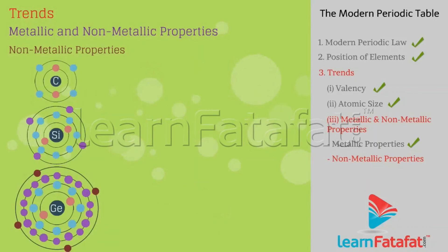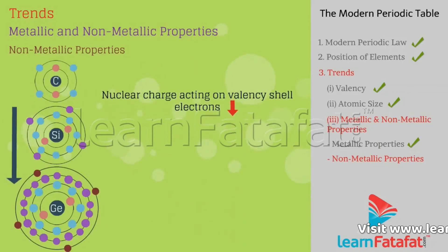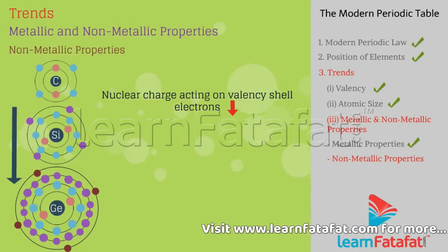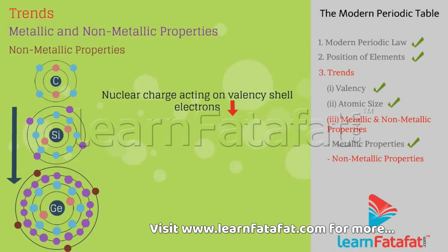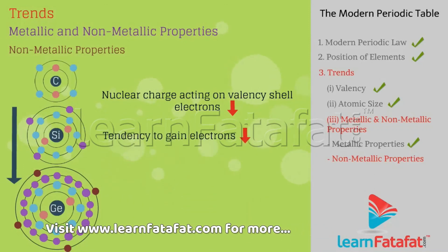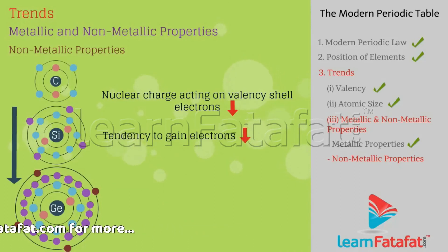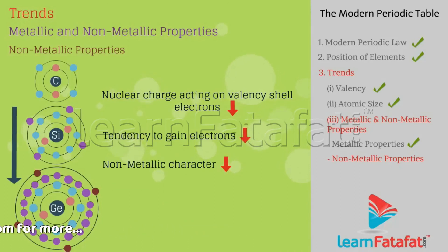Down the group, number of shells increases. The nuclear force of attraction on outermost shell electrons decreases. Tendency to gain electrons decreases, hence non-metallic character decreases.